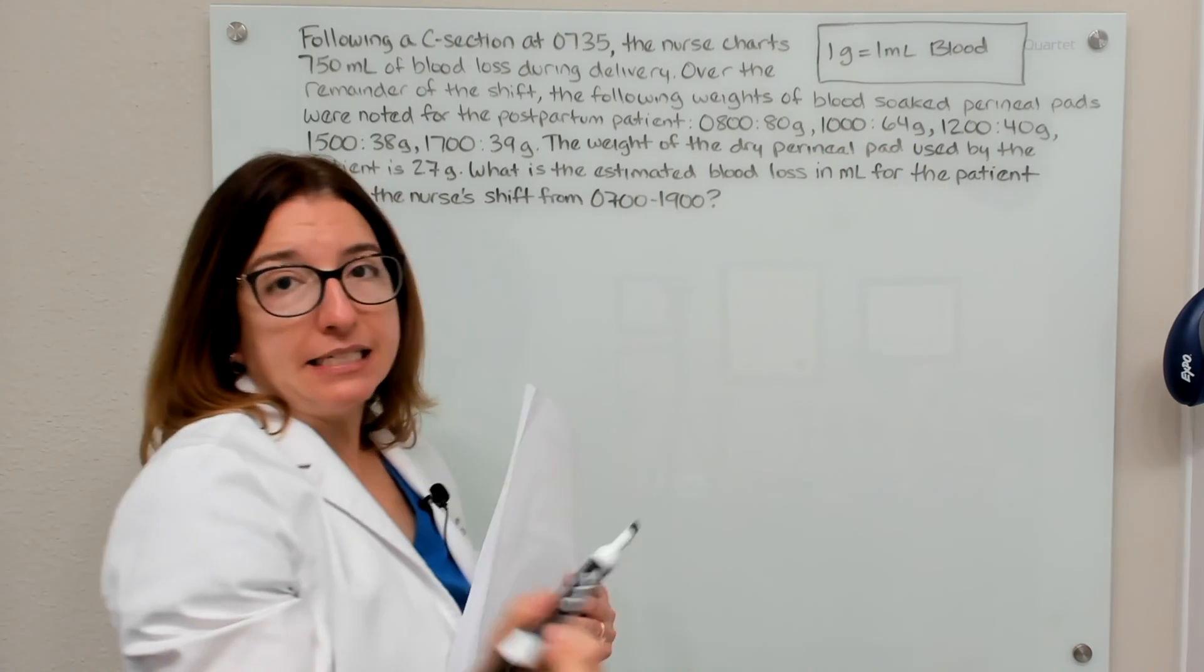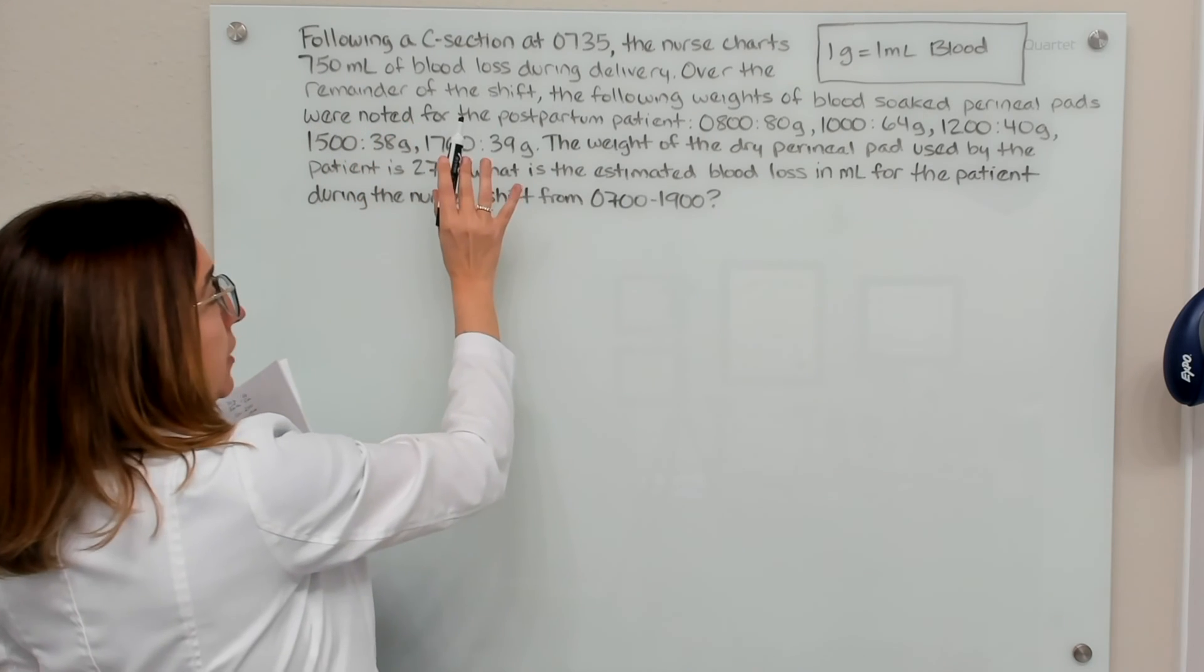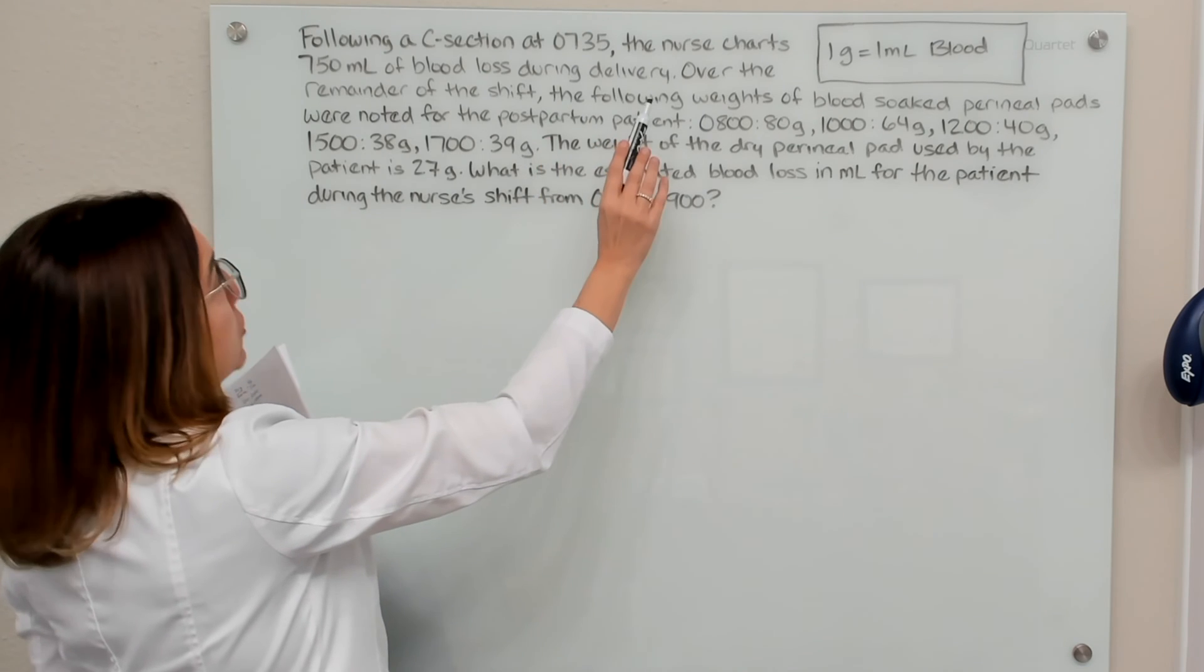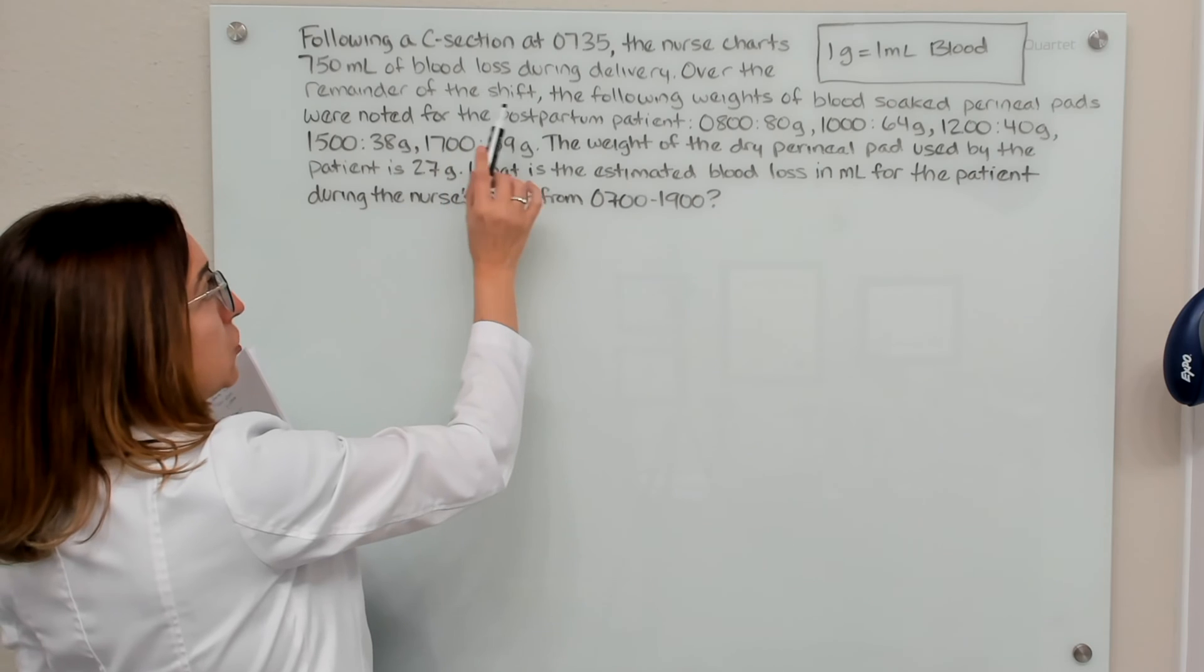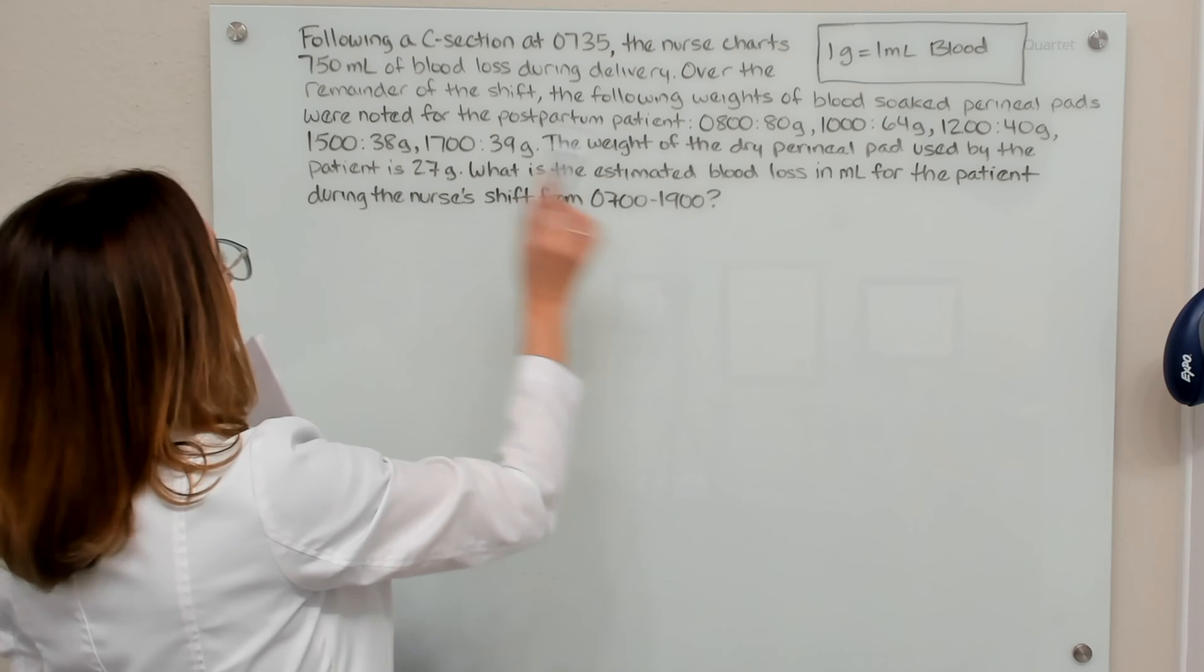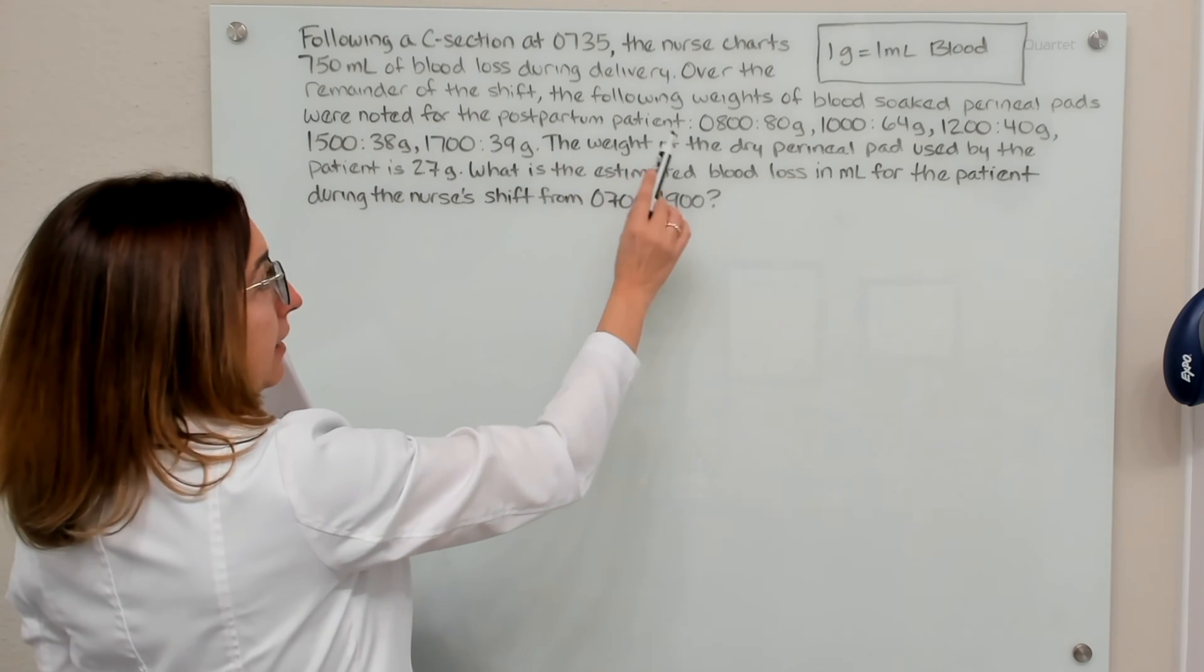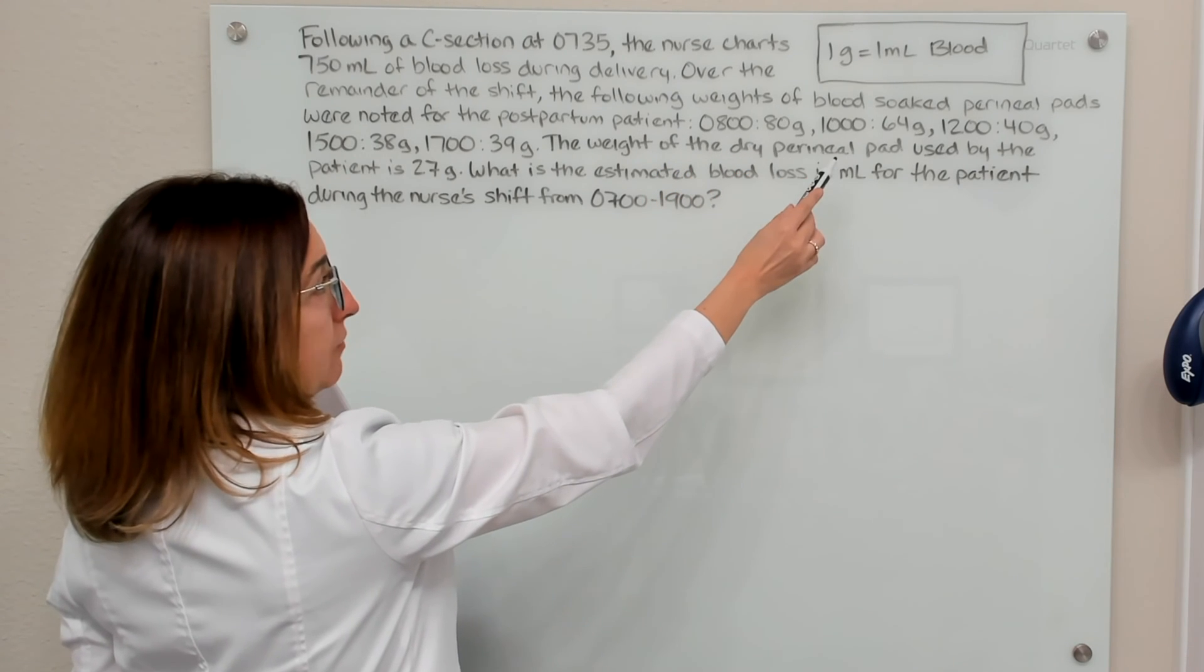All right, so let's take a look at our example up here. Following a C-section at 0735, the nurse charts 750 milliliters of blood loss during delivery. Over the remainder of the shift, the following weights of blood-soaked perineal pads were noted for the postpartum patient. At 8 o'clock, they had 80 grams. At 10 o'clock, 64 grams.